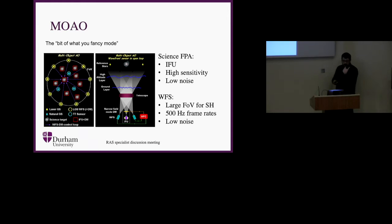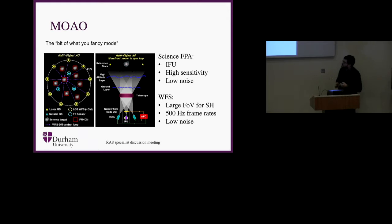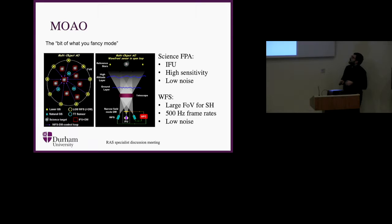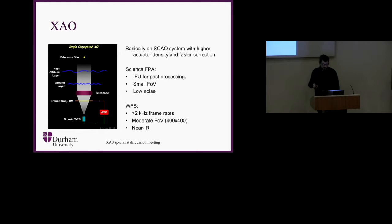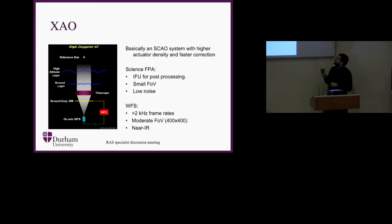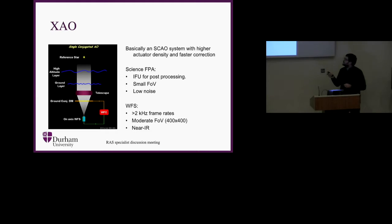The requirements for MOAO: for the focal plane array you would ideally use something built for an IFU so you can get the maximum amount of information from these very varied sources in the field of view. That in turn requires very high sensitivity, which means low noise for the science focal plane array. These would be distributed IFUs around the field of view. For the wavefront sensor: large field of view, 500 Hz frame rates, and low noise.